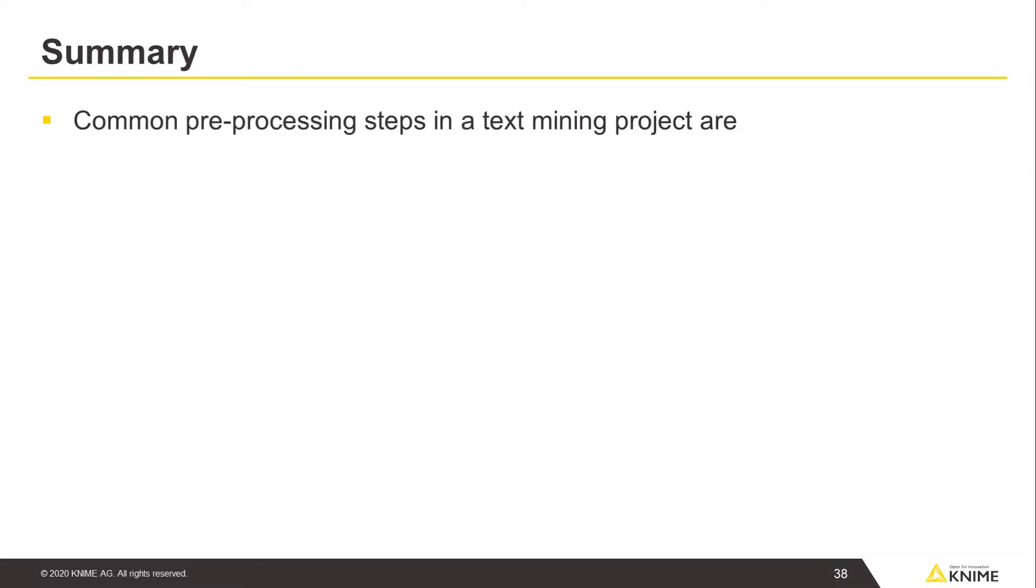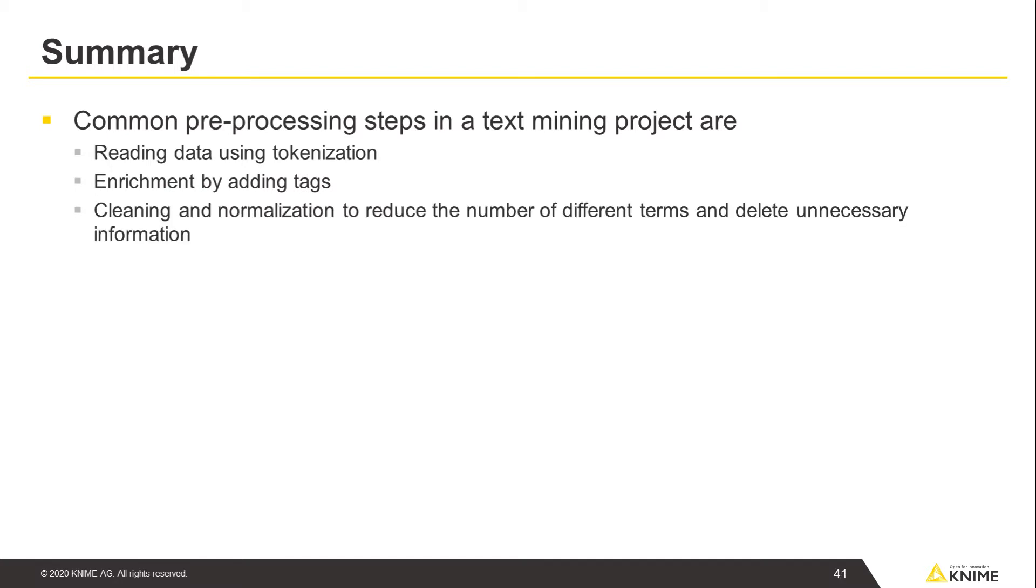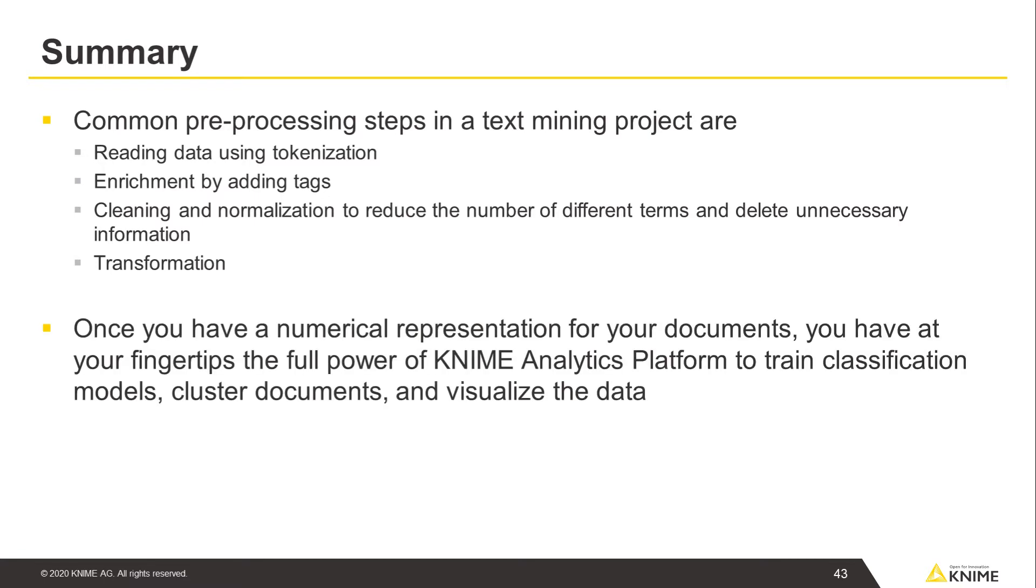Let's summarize. Common pre-processing steps in a text mining project are: Reading data using tokenization, enrichment by adding tags, cleaning and normalization to reduce the number of different terms and delete unnecessary information, and transformation. Generally speaking, once you have a numerical representation for your documents, you have at your fingertips the full power of KNIME Analytics Platform to train classification models, cluster documents, and visualize the data as you see fit.